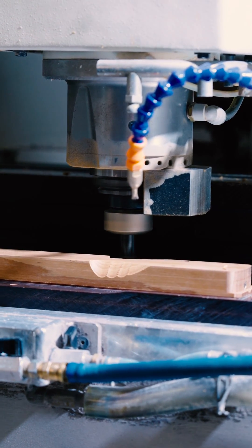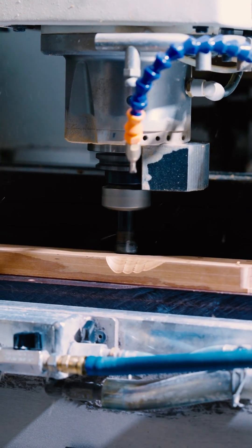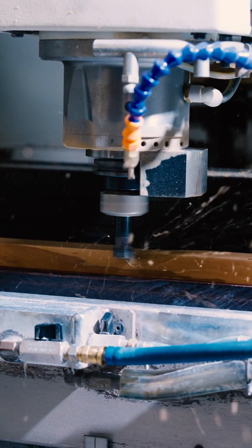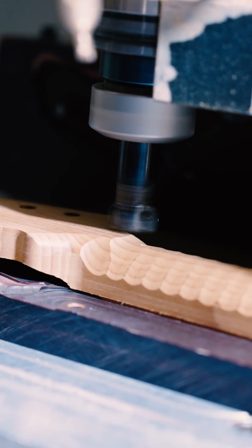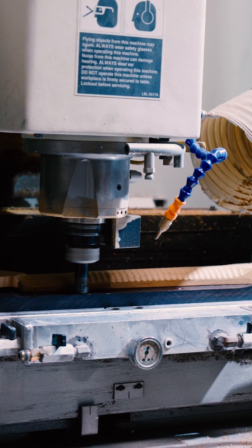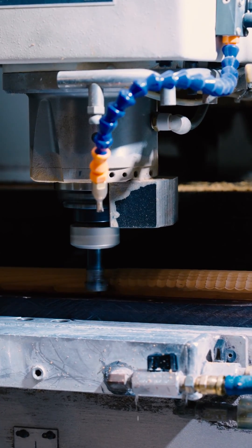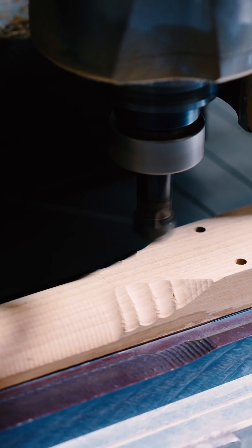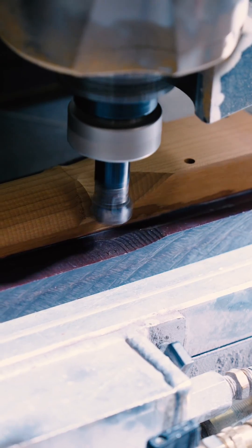First, we'll do the rough pass on this, and then it'll come back and do a cleanup pass. Now it's starting to define the transition area. You notice the step over is finer, a tighter step over. A little bit easier for us to sand out.